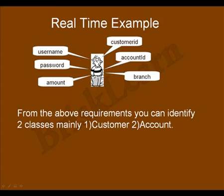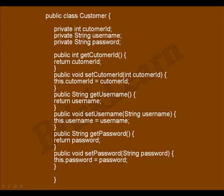Let us see the customer class. Public is the access specifier, class is the keyword, and customer is the class name. Open curly brace indicates begin of class and closing curly brace indicates end of class. In between a class you can provide only variables and methods. Here customerID, username, and password are variables. And getCustomerId, setCustomerId, getUsername, setUsername, getPassword, and setPassword are methods.